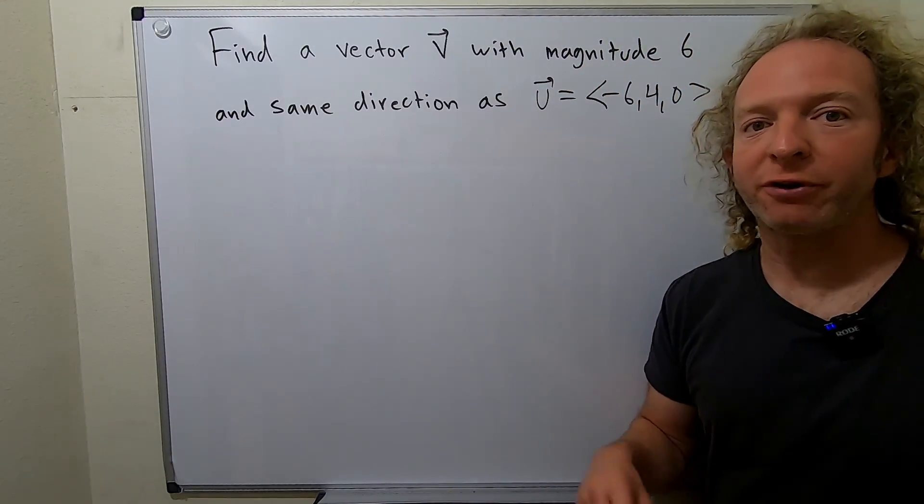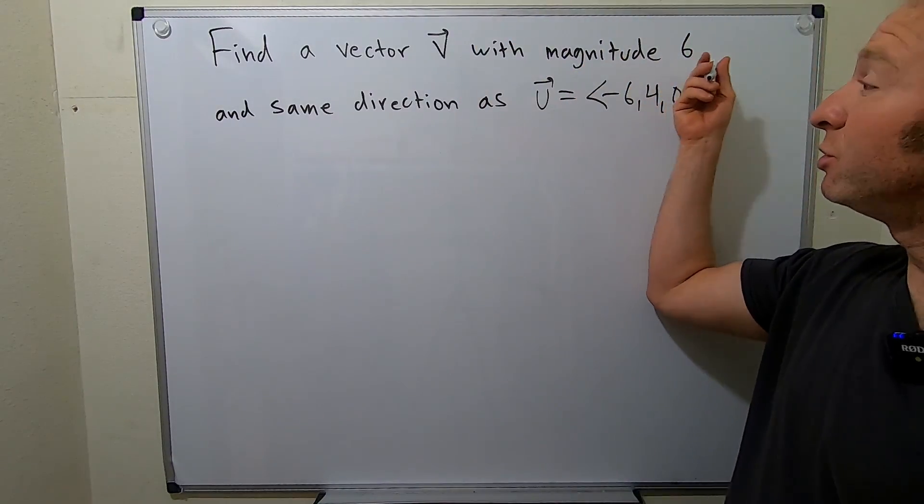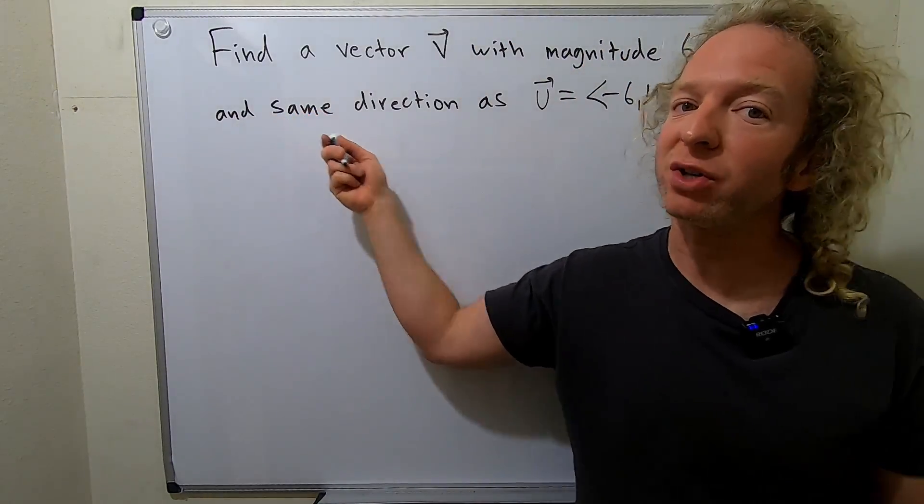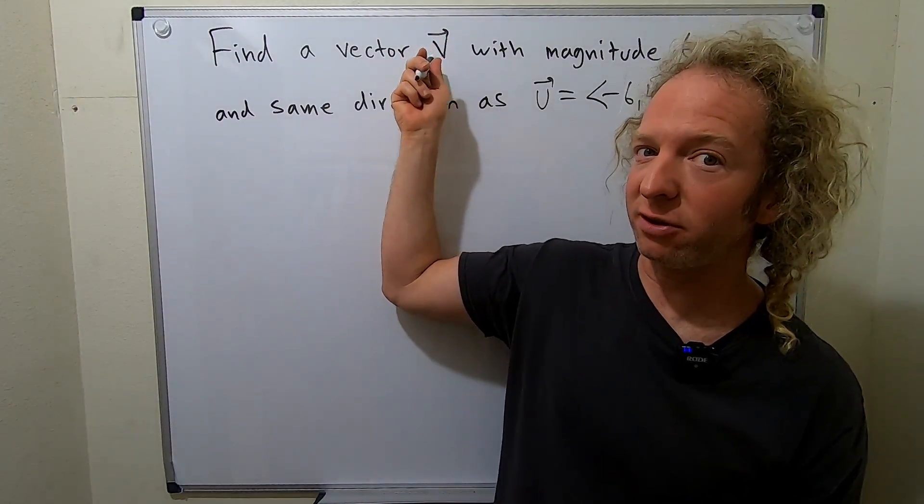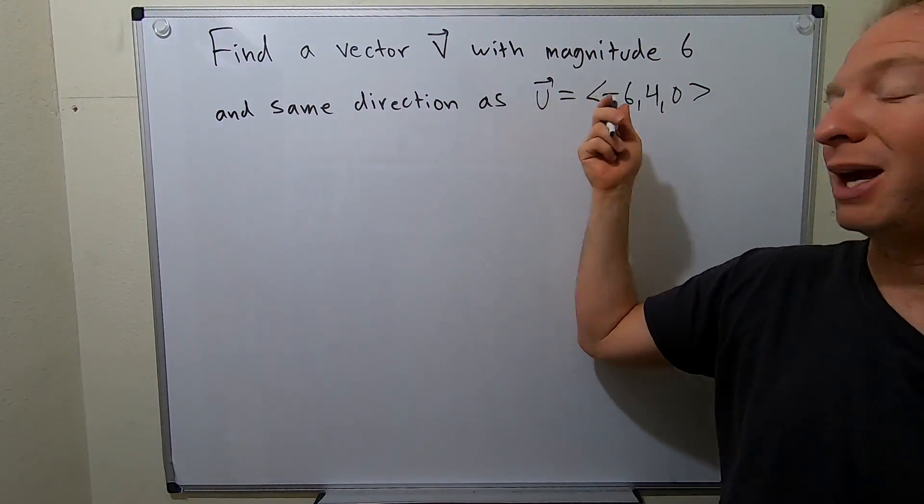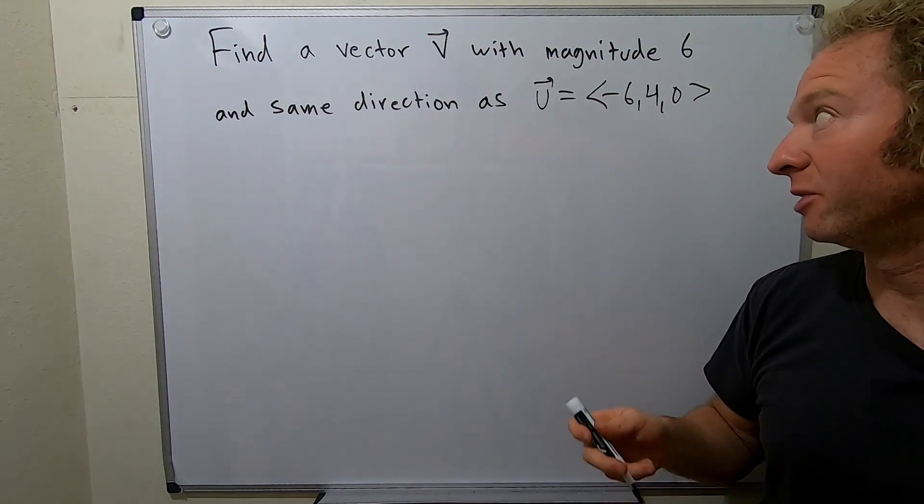Hey, what's up? So in this video, we're going to find a vector V with magnitude 6 and the same direction as this vector here. So the question again is to find a vector that has magnitude 6 and points in the same direction as this vector here.